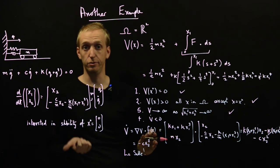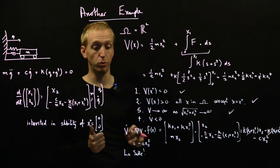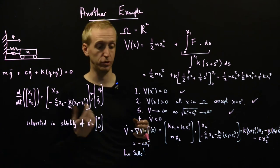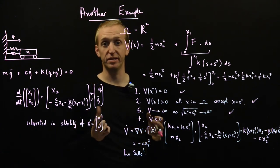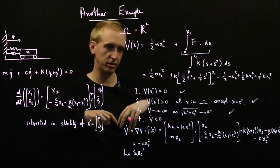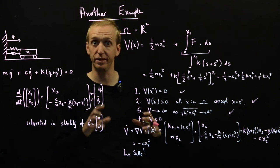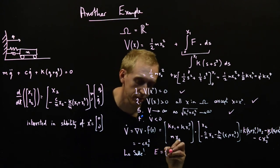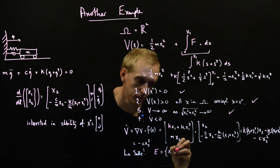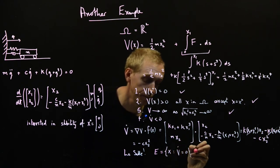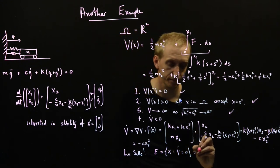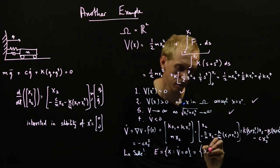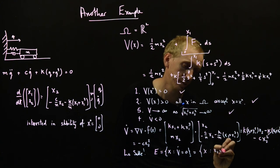So to apply LaSalle, we had to do two things. We had to find this set that we called E, which is the set of points for which V dot is equal to 0. And then find the largest invariant set of that, which we called M. And an invariant set was a set which, if you start anywhere in that set and you just let the system run, you'll stay within that set. So let's start by finding E. So E is the set of points in x such that V dot is equal to 0, which in this case is the set of points x such that x2 is equal to 0.